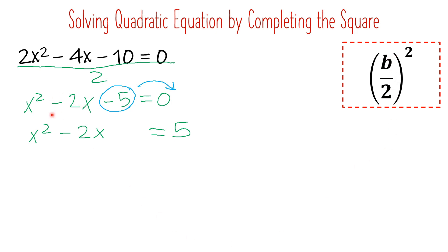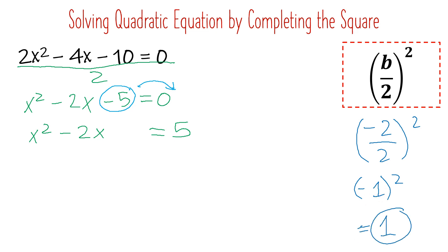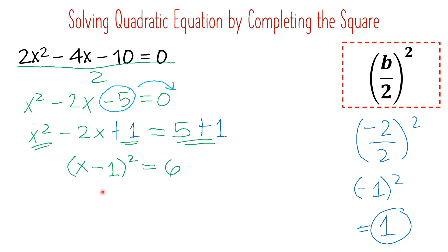Remember, you have to add on both sides. Since it's already a perfect square trinomial, we write it as a square of a binomial by getting the square root of the first term (x) and last term (√1 = 1). The sign comes from the second term, which is negative, so we get (x − 1)² = 5 + 1 = 6. We then extract the square root by writing a radical on both sides.